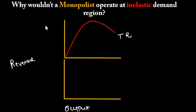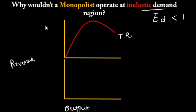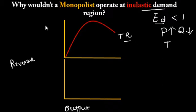We want to know why a monopolist wouldn't operate in the inelastic demand region. Inelastic demand means the elasticity of demand is less than 1. When elasticity of demand is less than 1, and price increases, quantity decreases according to the law of demand, but in the case of inelastic demand, total revenue will change in the direction of price — meaning it will increase.